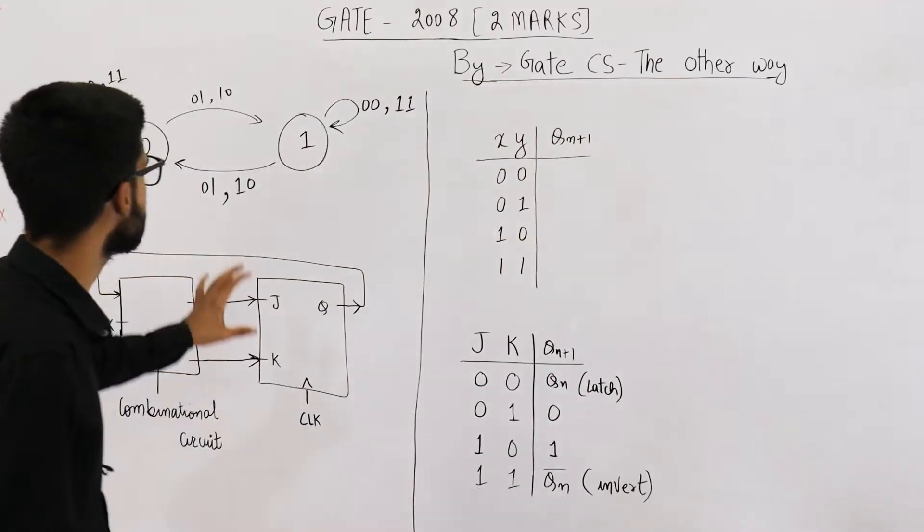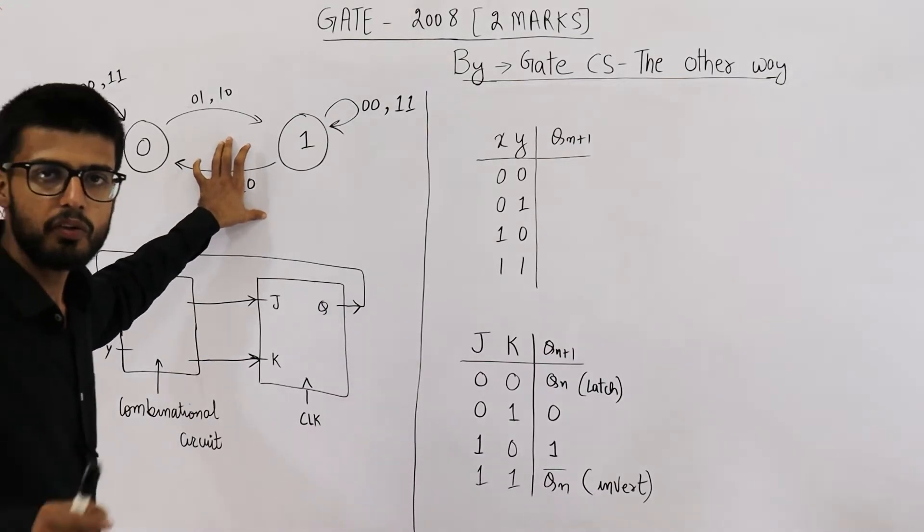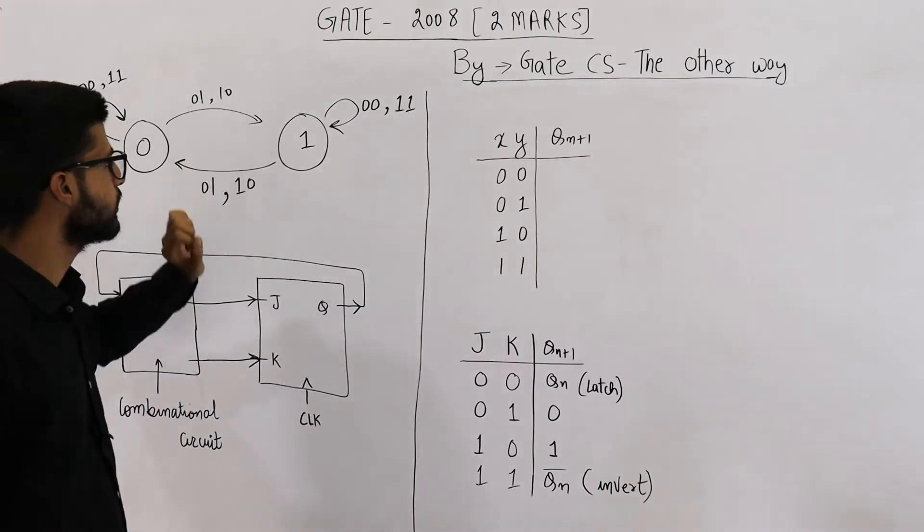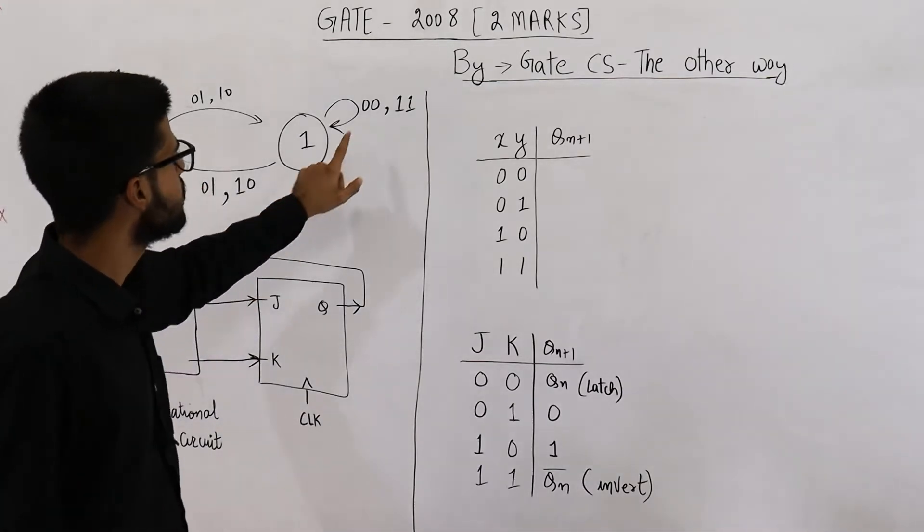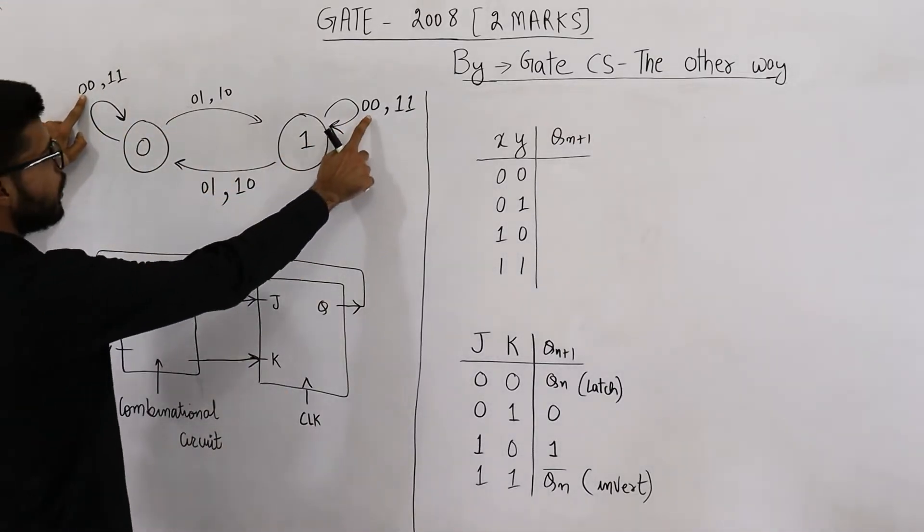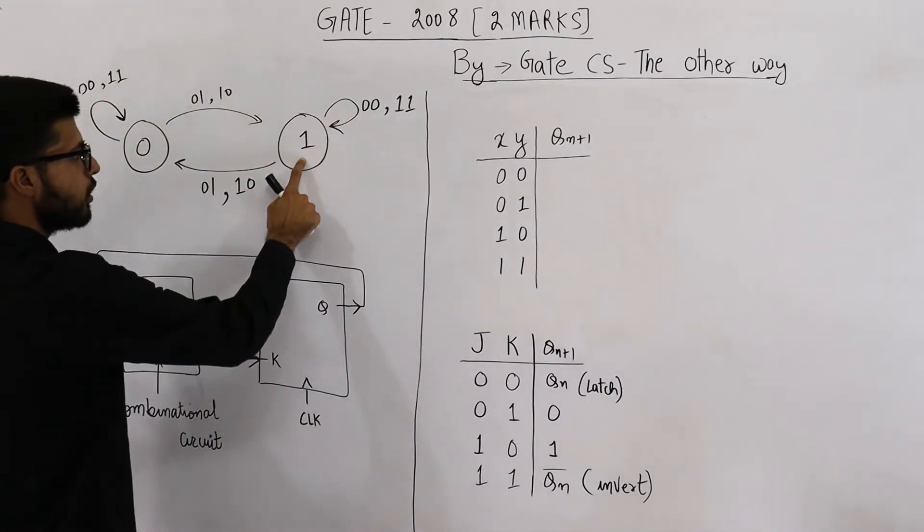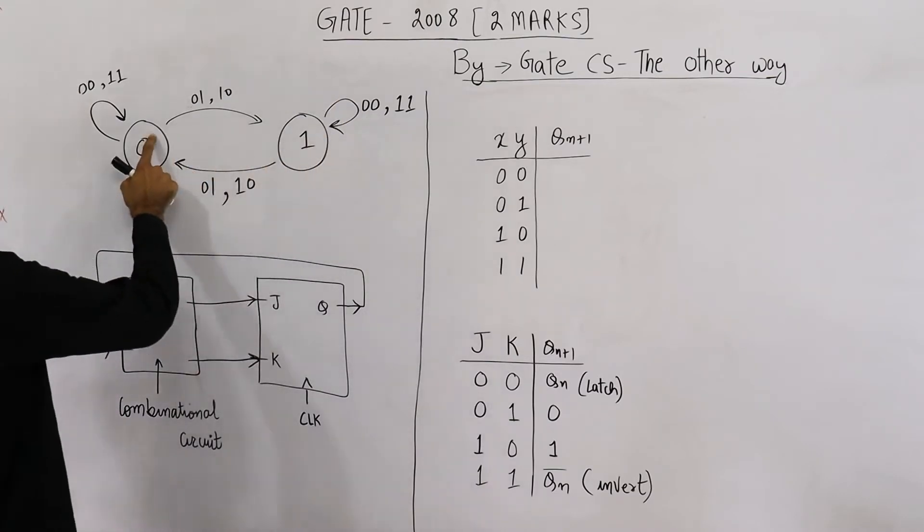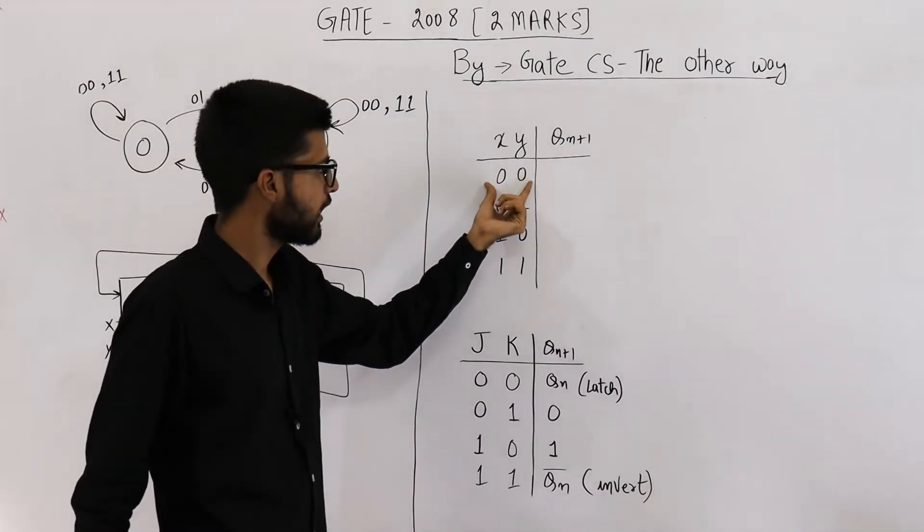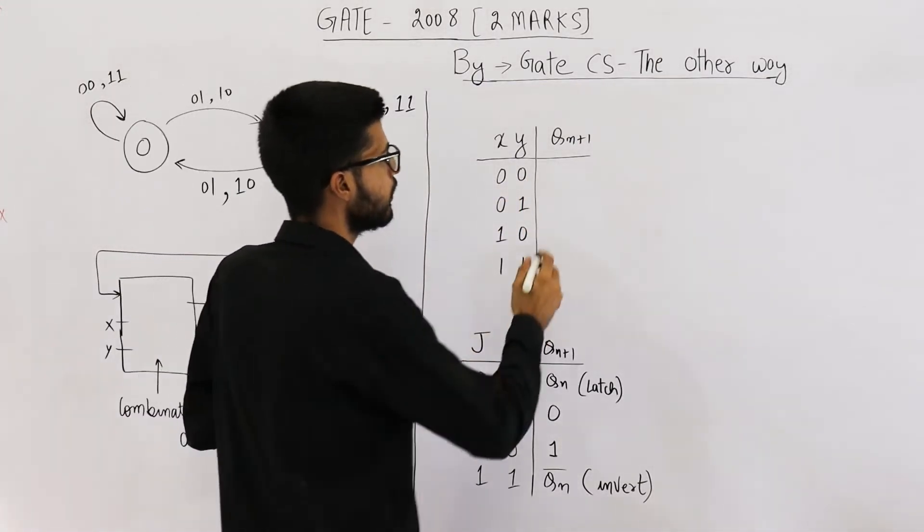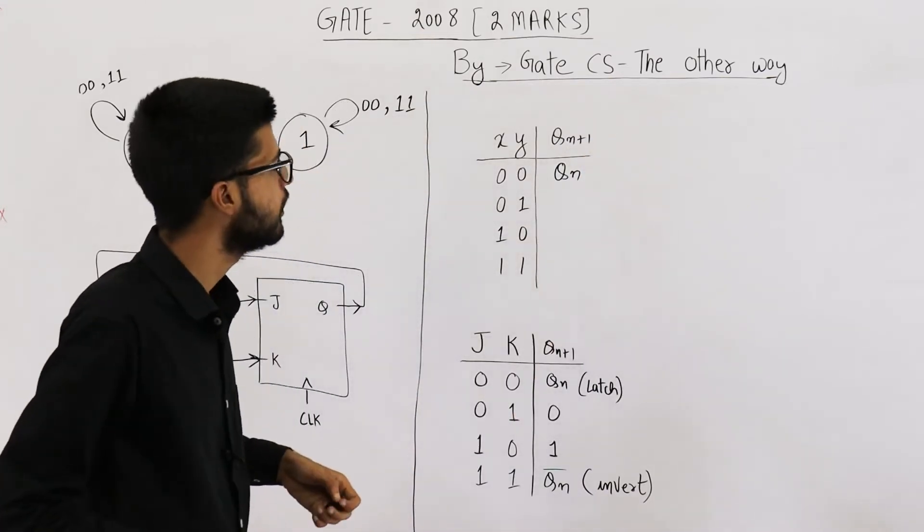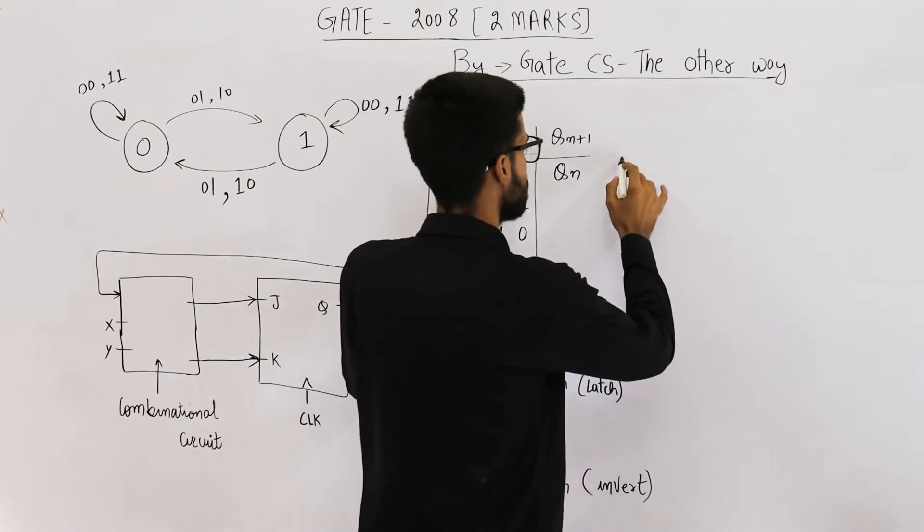See, this is the state transition diagram of the flip-flop that we wish to implement using this circuit. Let us analyze this flip-flop first. See, whenever the input is 0,0, whatever is the current state - if you are on 1 you will remain on 1 only, if you are on 0 you will remain on 0 only. So on X and Y equal to 0,0, the next state will be same as current state. Qn plus 1 is same as Qn. That is, this is latch state.